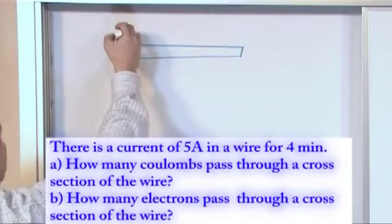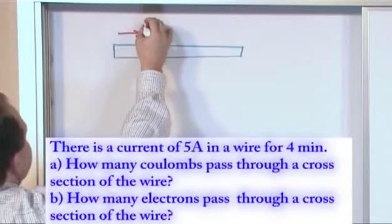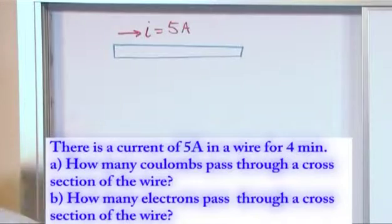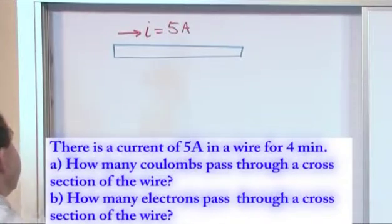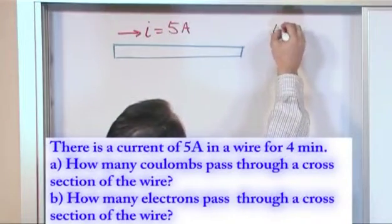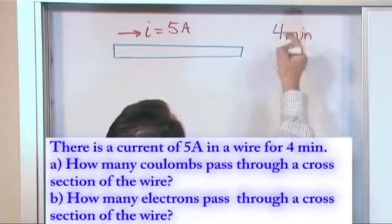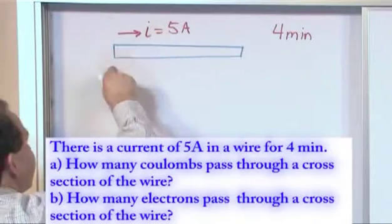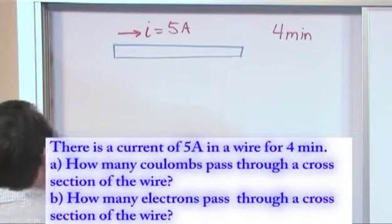The current in this wire, I'm going to represent as I equals 5 amps. We do this for 4 minutes. So literally we turn the switch on, we have 5 amps of current flowing through, we let it go for 4 minutes and then we shut it off.